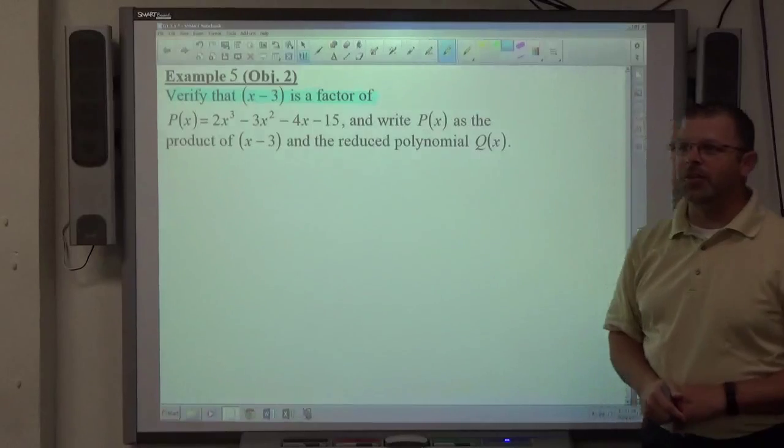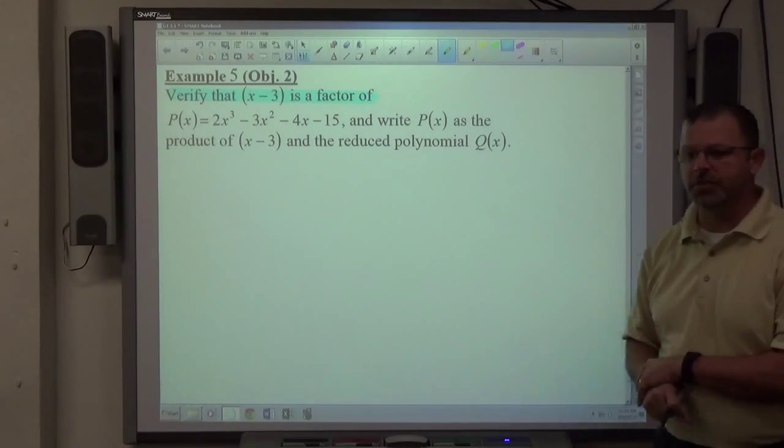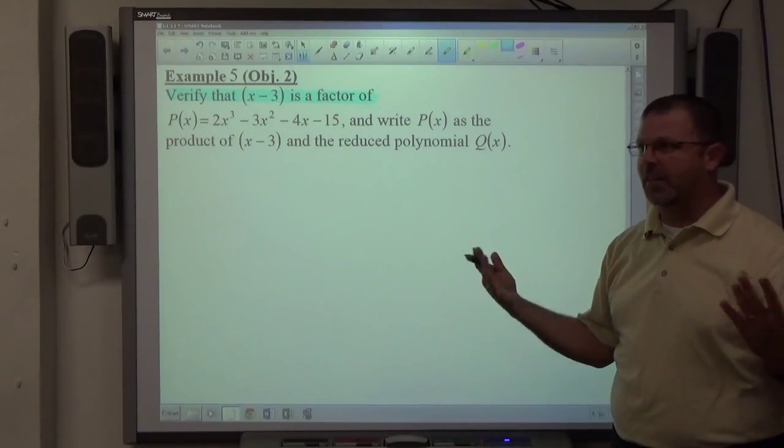So if you get a remainder that isn't zero, you did something wrong. If you're verifying something's a factor, it's telling you that, in fact, that is a factor.